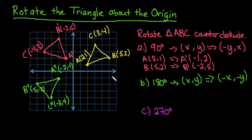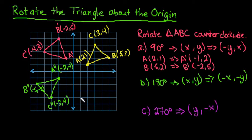For the last one, we are going to rotate the original shape 270 degrees. What's going to happen is we are going to switch our x and y coordinates, but this time our new x coordinate is going to be positive and the new y coordinate is going to be negative. So we switch x and y, then change the sign of what would be our new y coordinate.